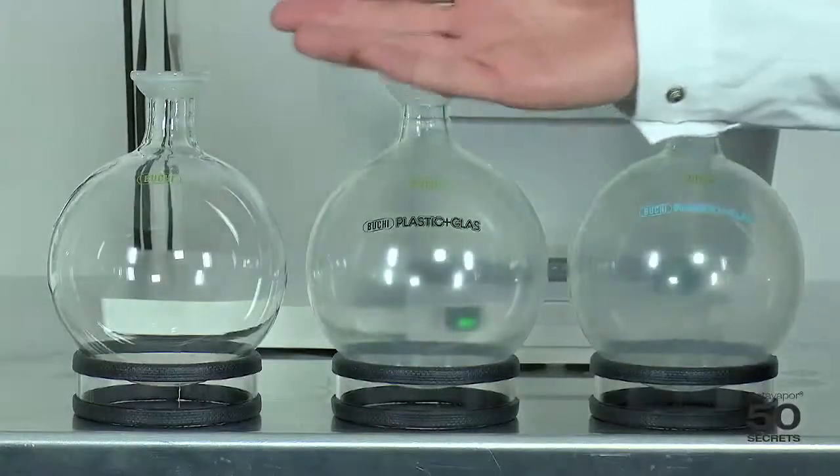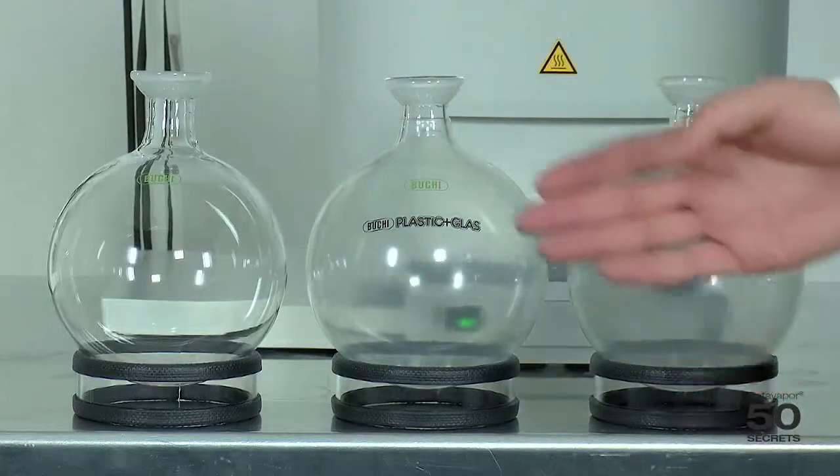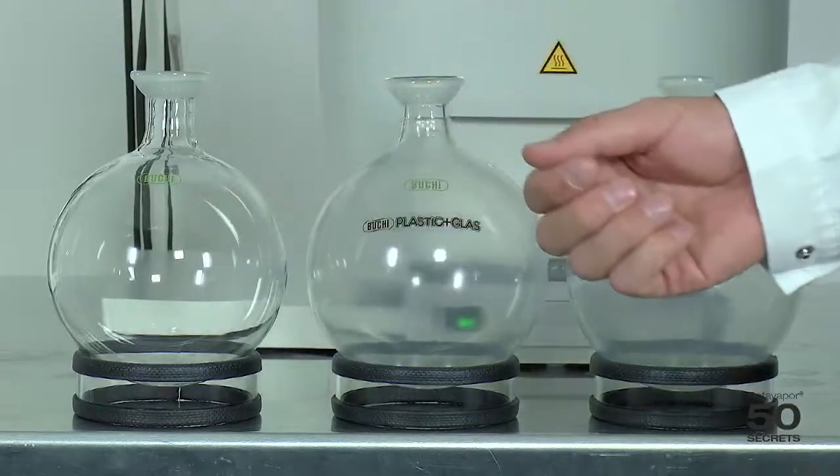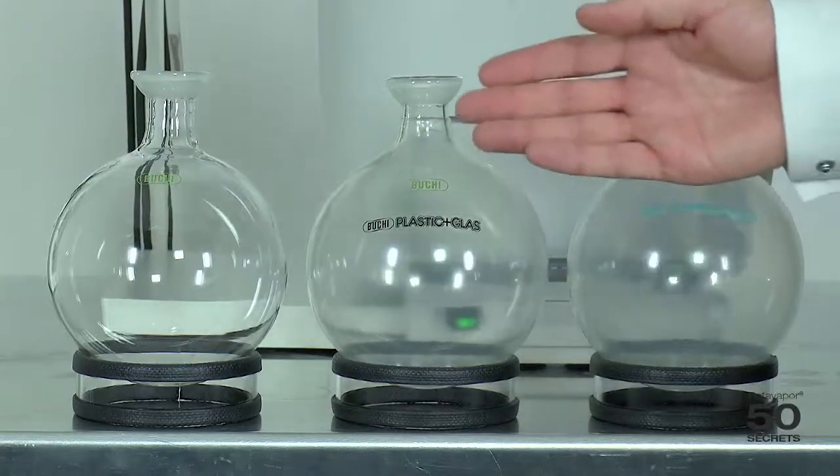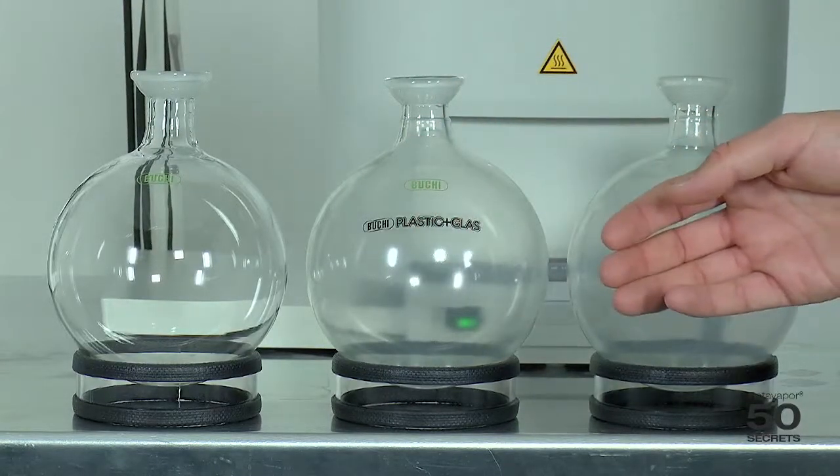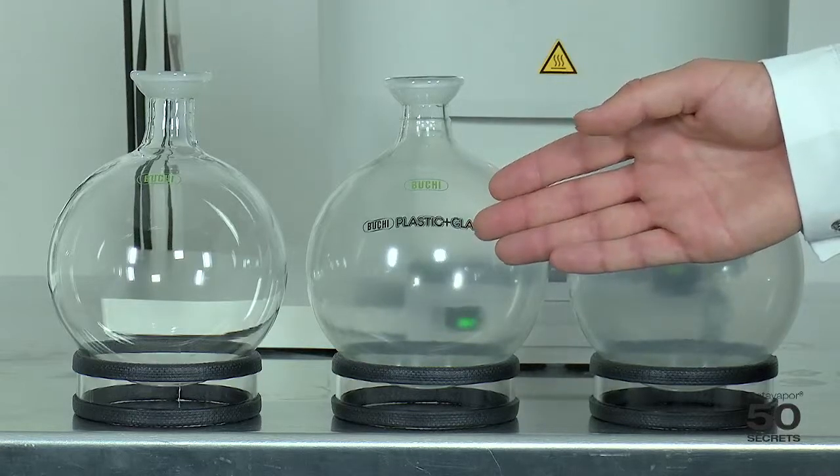Here we see three different receiving flasks. The very left one has no coating at all, just plain borosilicate glass. The one in the middle is plastic and glass coated, the standard coating we offer.